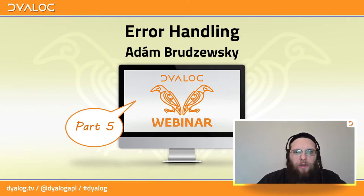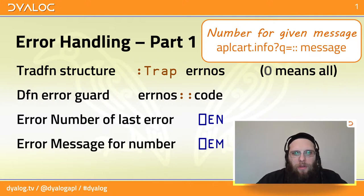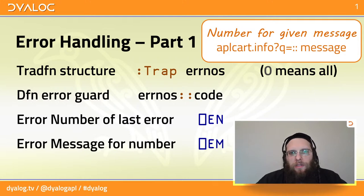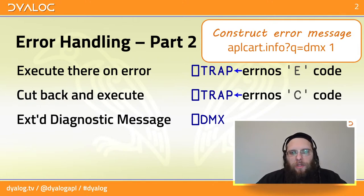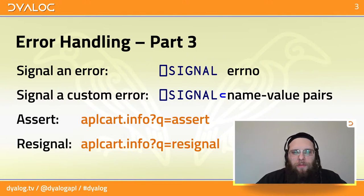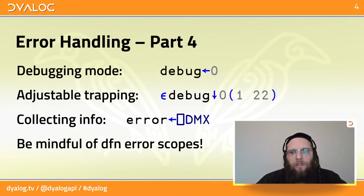Let's briefly go over what we've covered in the previous episodes. Part one was about the basics of error handling — the trap control structure, error codes, and basic system names. Part two covered QuadTrap and getting more information from QuadDMX. Part three covered raising your own errors using QuadSignal. Part four covered customizing error behavior for debugging and runtime, and collecting information about errors.